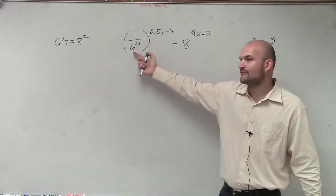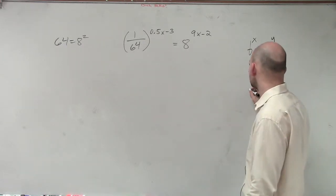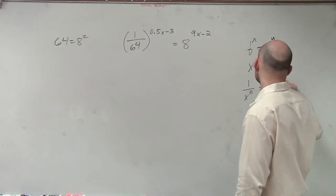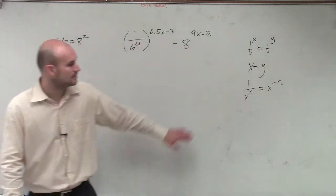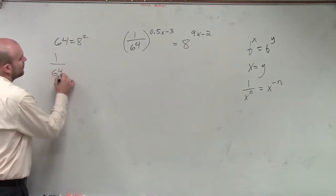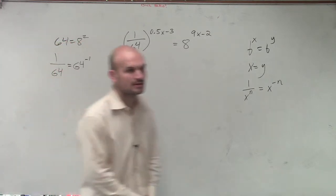So how am I going to write a fraction as a whole number? Now remember, there was this rule that we stated: 1 over x to the n is equal to x to the negative n. That was your exponent rule. So what I could do is, if I say 1 over 64, that's equal to 64 to the negative first power.